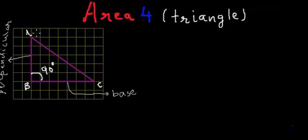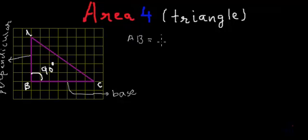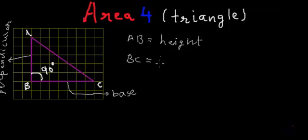A is the topmost vertex of the triangle and BC is the base. AB is actually a line which is drawn at 90 degrees to the base. So in this particular case AB is also called the height of the triangle, and BC is called the base of the triangle.